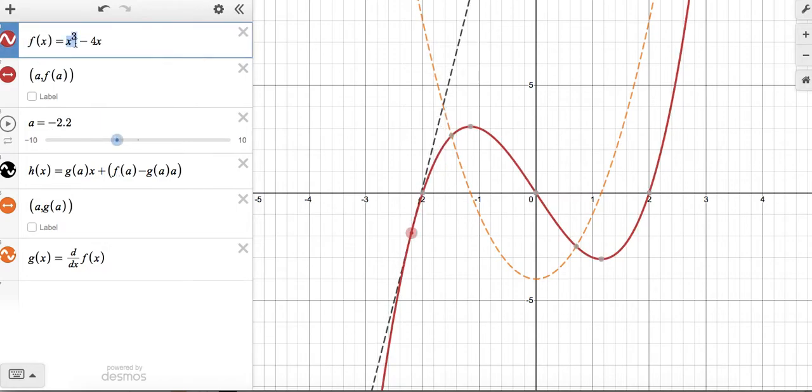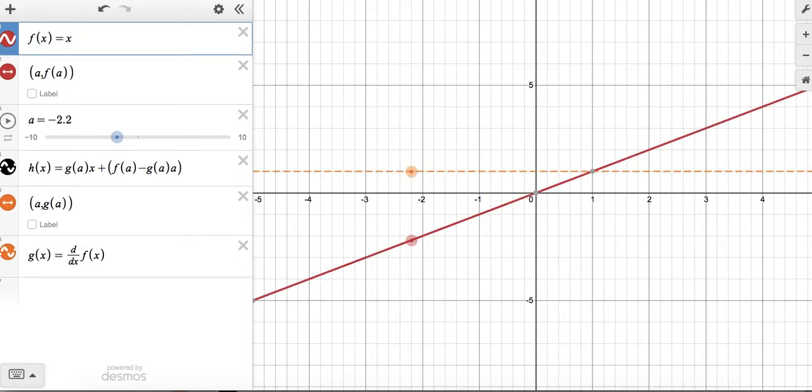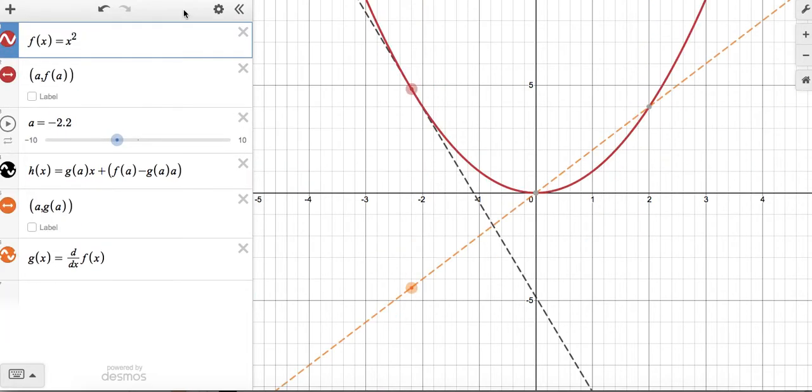We can change this to a quadratic, an x squared function. And again, as I move that tangent line along the graph, notice how the slope values are changing. In this case, the quadratic slope values are changing linearly, and they're just being traced out on that straight line there.